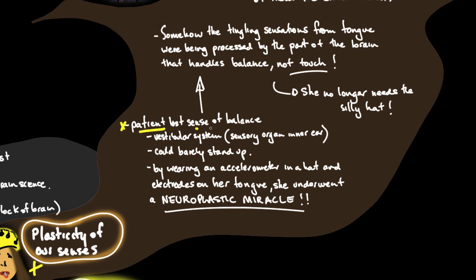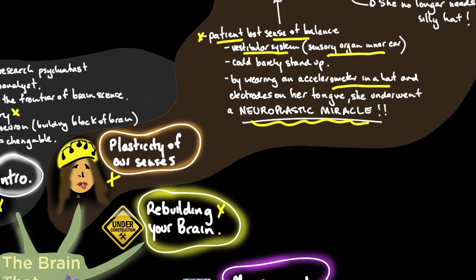This patient had lost sense of balance due to damage to the vestibular system, the sensory organ for the inner ear. She could barely stand up and her quality of life was very poor. She underwent a neuroplastic miracle by wearing a mechanism with an accelerometer in her hat and electrodes on her tongue.